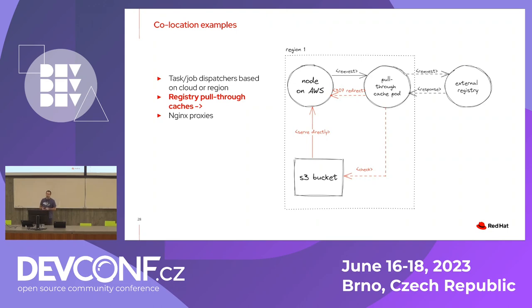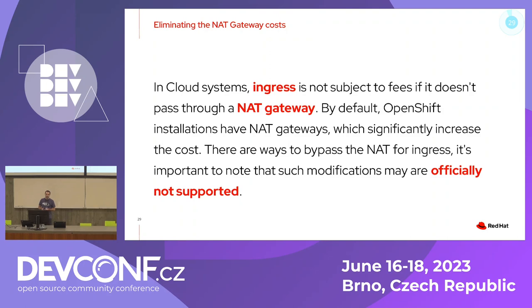Another thing worth briefly mentioning is eliminating NAT gateway costs. In cloud systems, ingress is not subject to NAT gateway charges if traffic doesn't pass through one. By default, OpenShift uses NAT gateways. If you want to consider this as a cost-saving option, note that modifications are not officially supported, but it can be done on AWS, GCP, and also Azure.